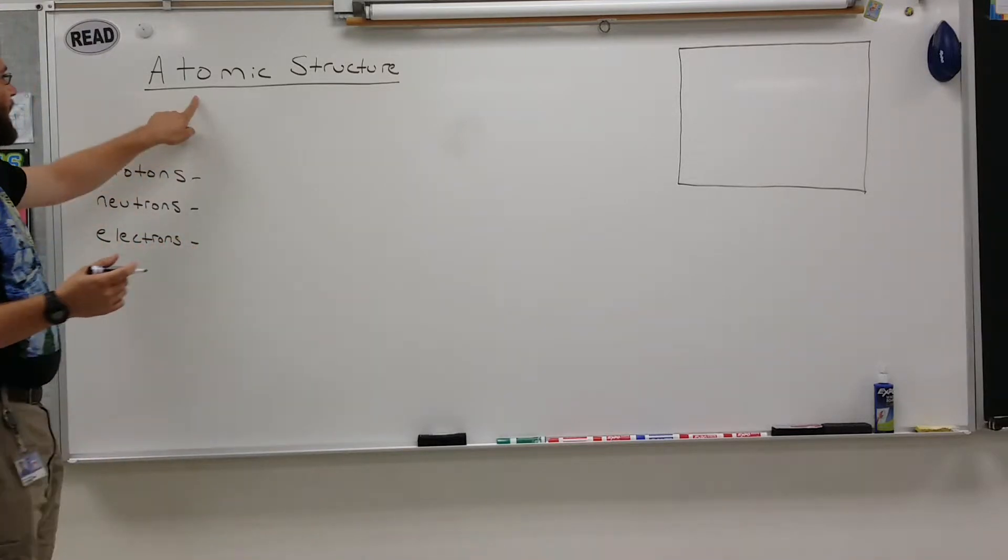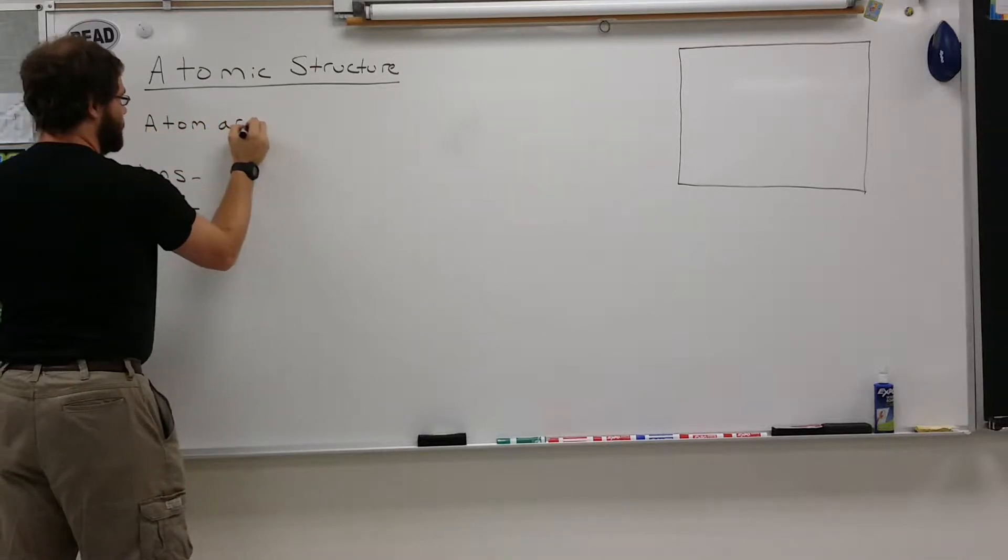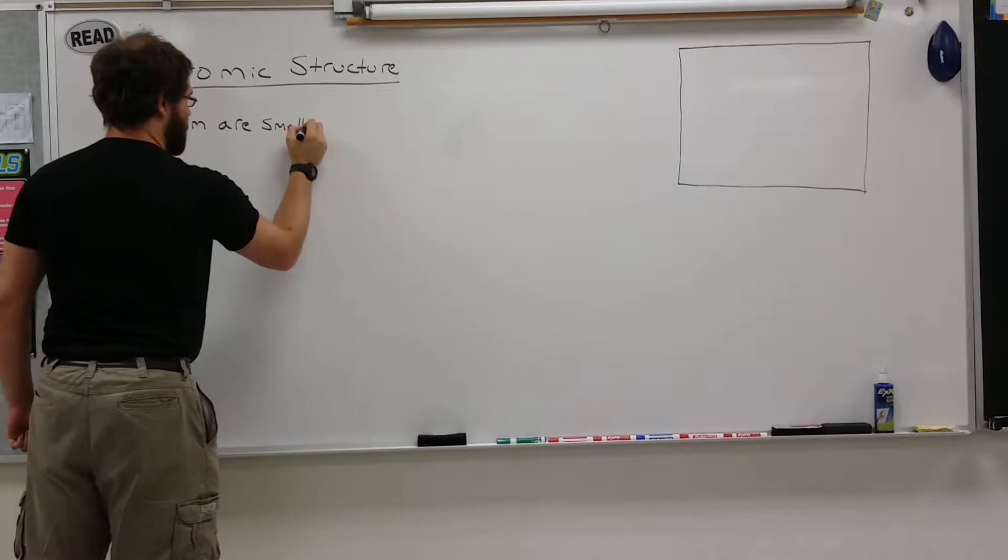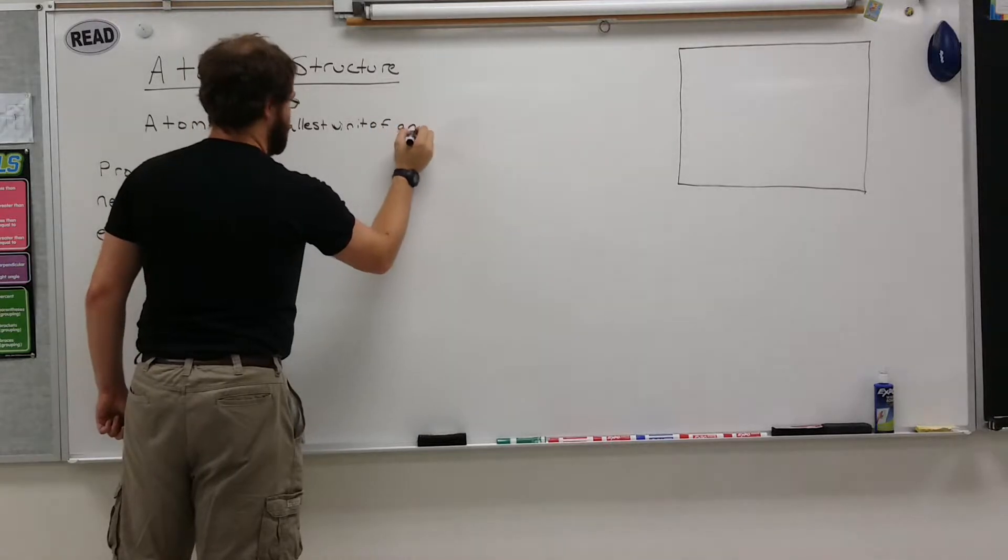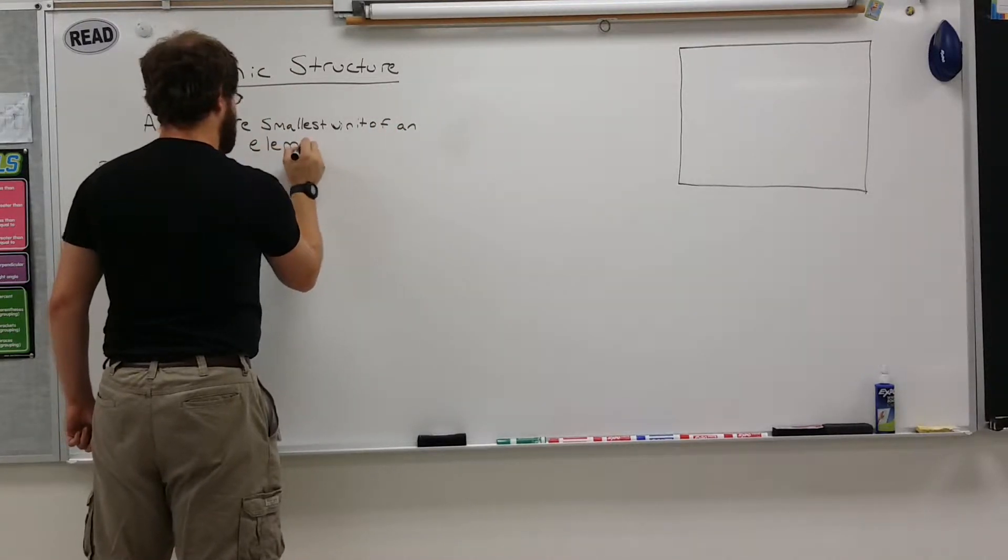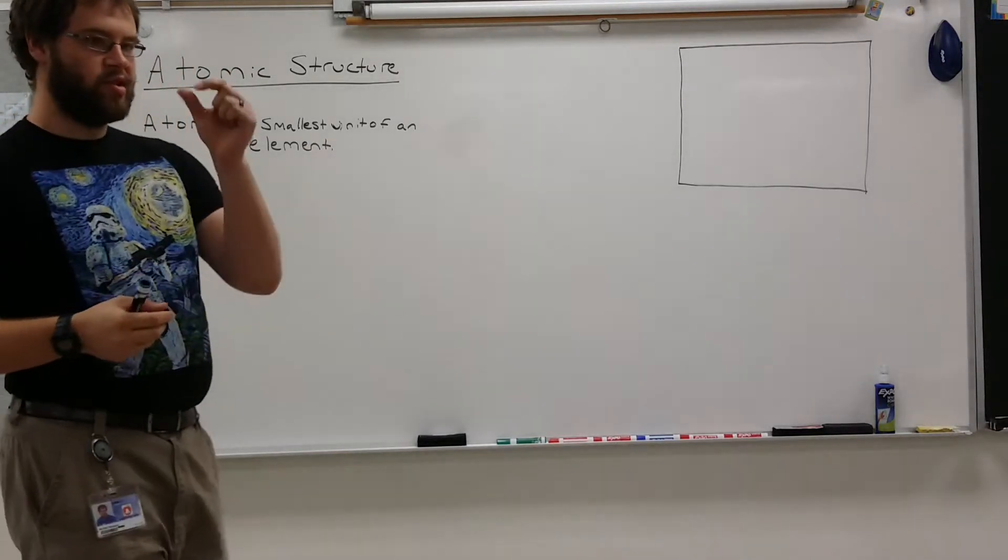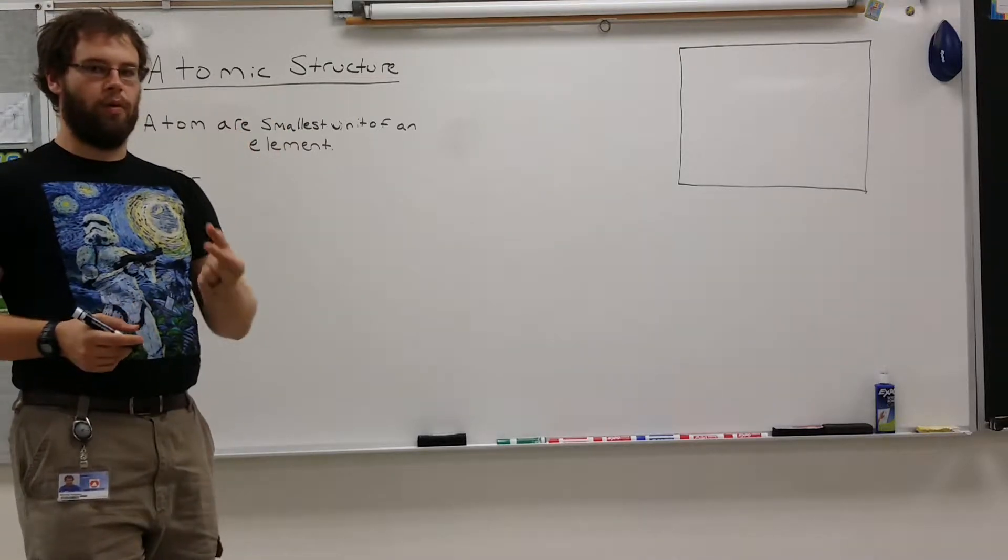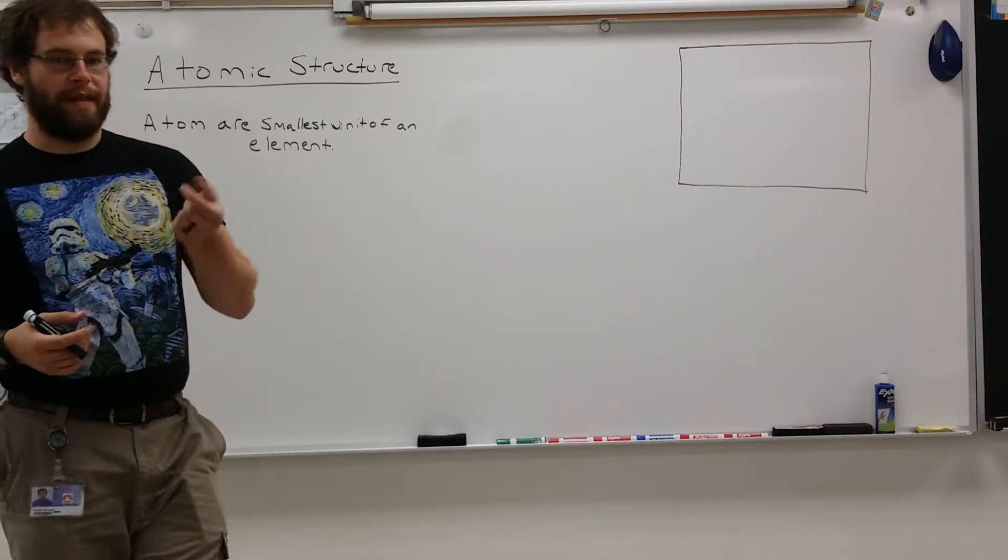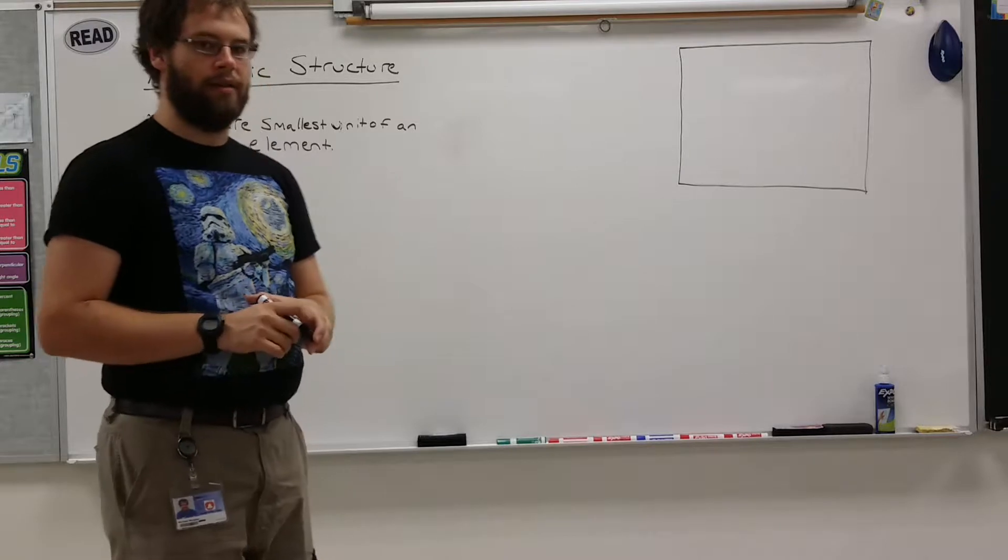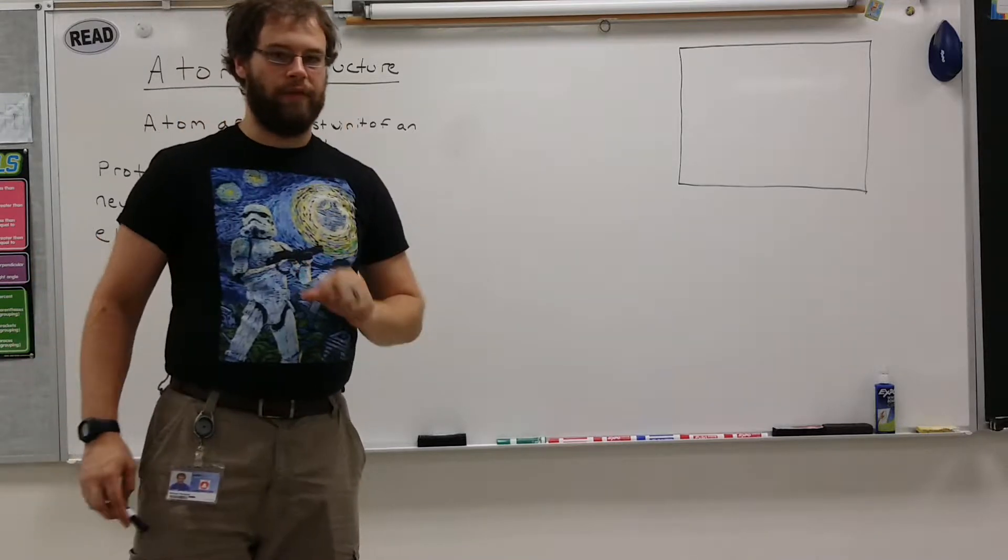To begin, we're just going to talk about what an atom is. Atoms are the smallest unit of an element. For instance, one of our elements may be gold. An atom is the smallest thing that is still gold. If you get any smaller than that, it's no longer gold, it's a different thing. So any element on the periodic table, one atom of that would be the smallest amount you could have of any of those substances.